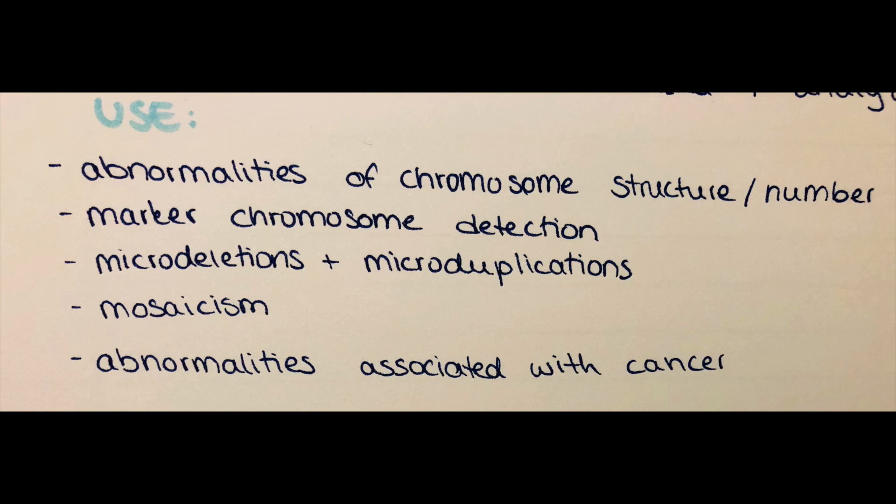This technique, in opposition to the other technique, can be used for microdeletions and also microduplications, as then more of these fluorescent sequences will bind to the chromosome and more signals will be generated. Also, the detection of mosaicism is possible, and also different genetic abnormalities associated with cancer—like for example multiple myeloma or chronic lymphocytic leukemia—can be possibly detected with this FISH method.